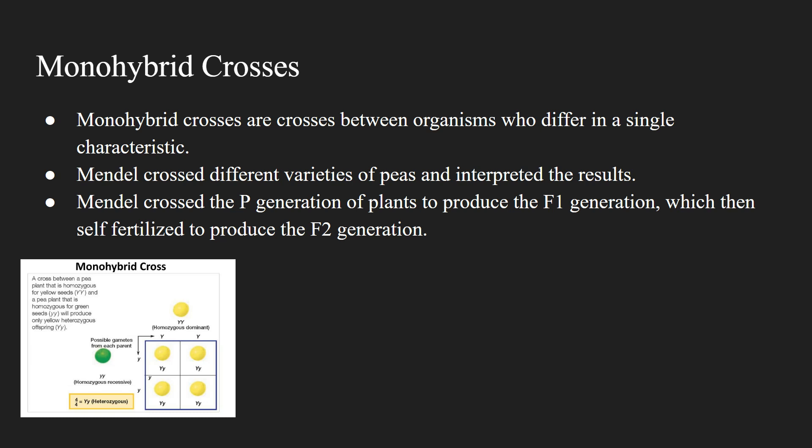When Mendel crossed a round pea and a wrinkled pea plant, which he verified were homozygous by crossing the plants for two generations, it resulted in a first filial generation that all had round seeds. When he self-fertilized the F1 generation, it led to a three to one ratio of round to wrinkled pea plants. Mendel reasoned that because the F1 generation passed on the wrinkled trait to the F2 generation, the F1 generation must contain genetic factors from both parents, even though the F1 generation did not show any phenotypes of wrinkled seeds.